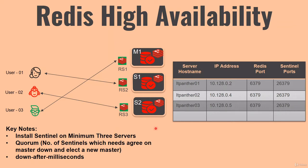Redis Sentinel needs to be installed on a minimum of three nodes, but those nodes do not need to be completely separate servers — they can be the same Redis servers. In this example, we have a master node and two slave nodes (S1 and S2). Redis Sentinel 1 runs on the master node, Redis Sentinel 2 runs on slave node 1, and Redis Sentinel 3 runs on slave node 2.